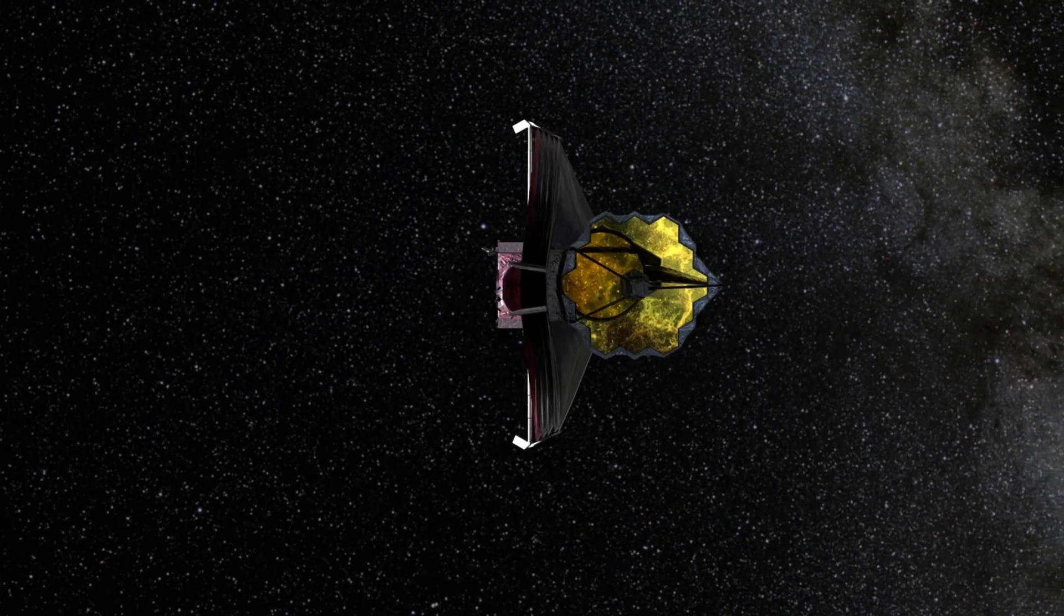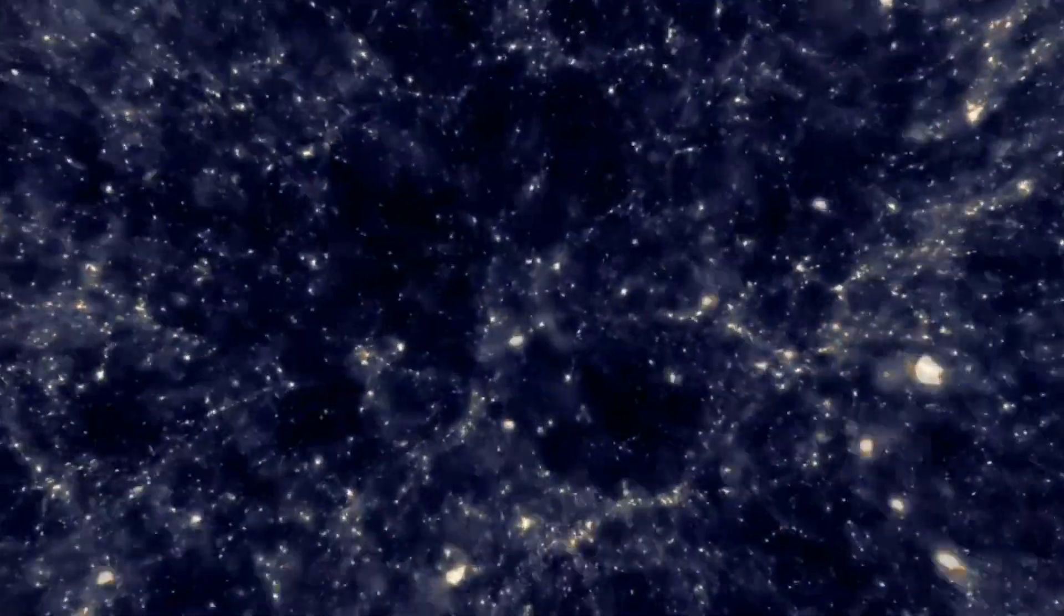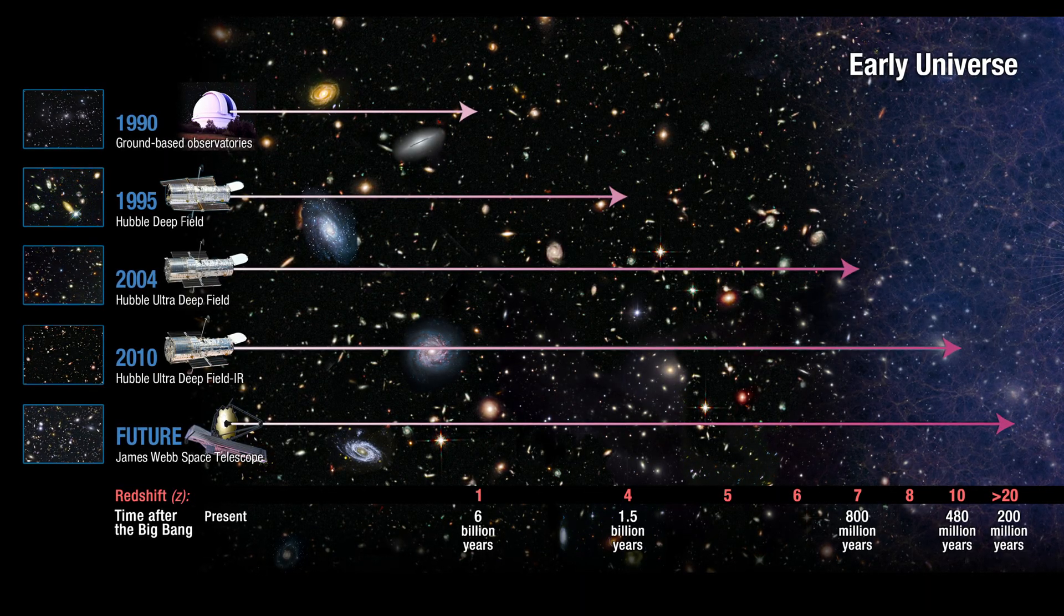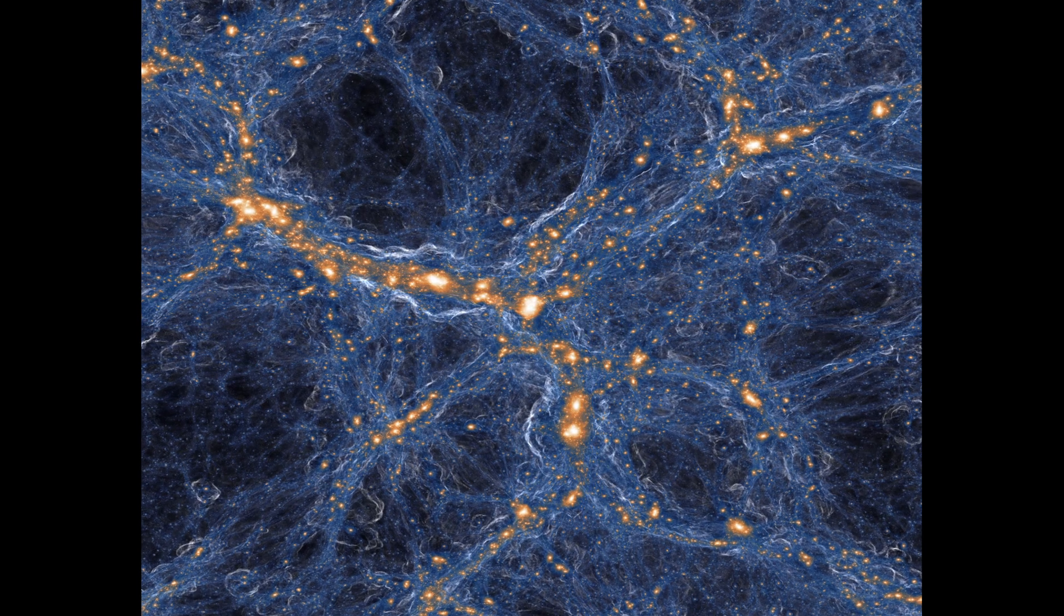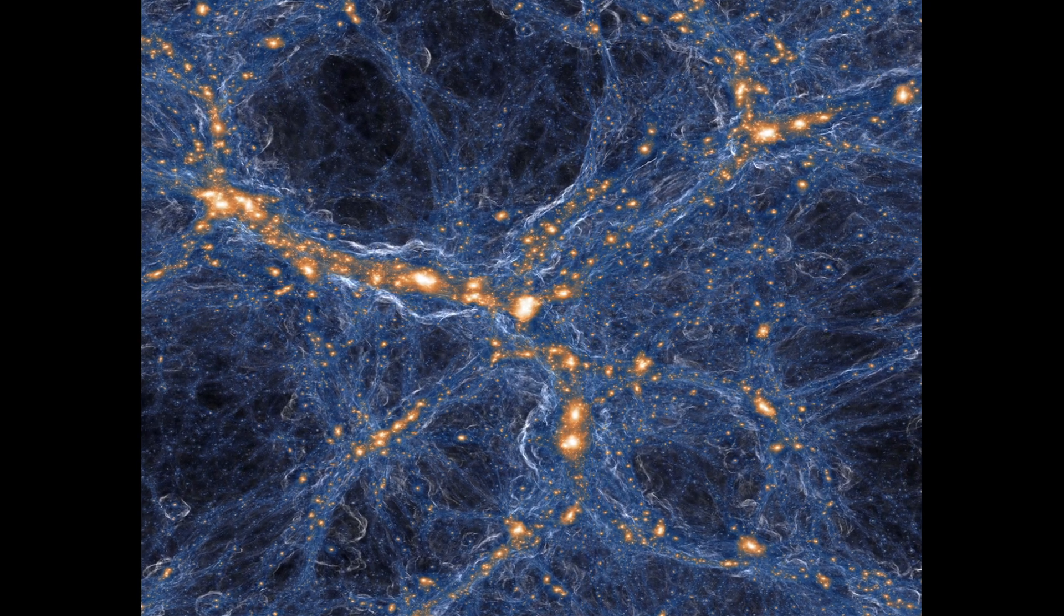One of the James Webb's science goals is to look back through time to when galaxies were young, and James Webb can look about 13.6 billion light-years away in space, which means it is looking 13.6 billion years back into the past.